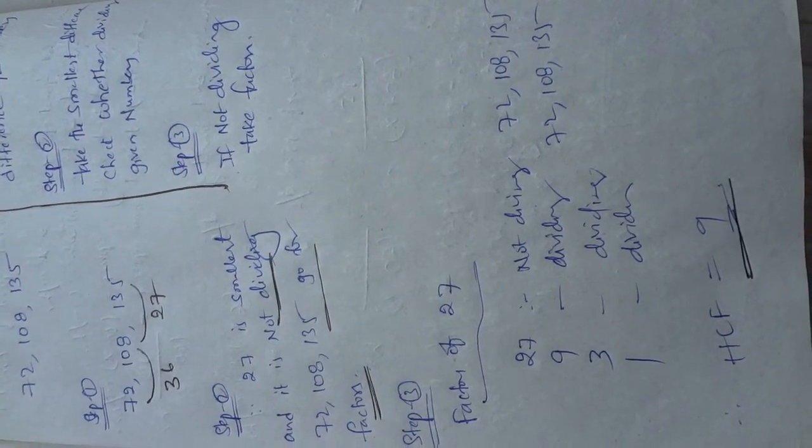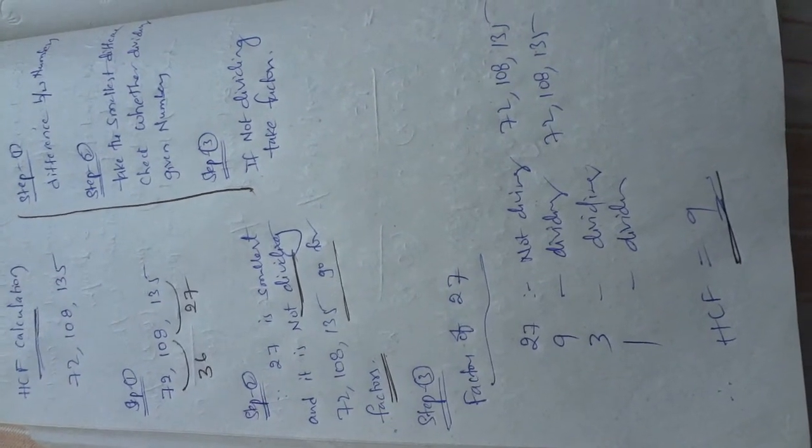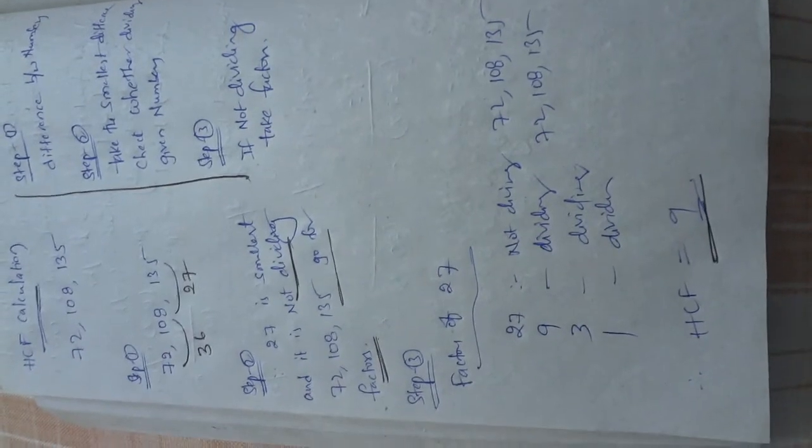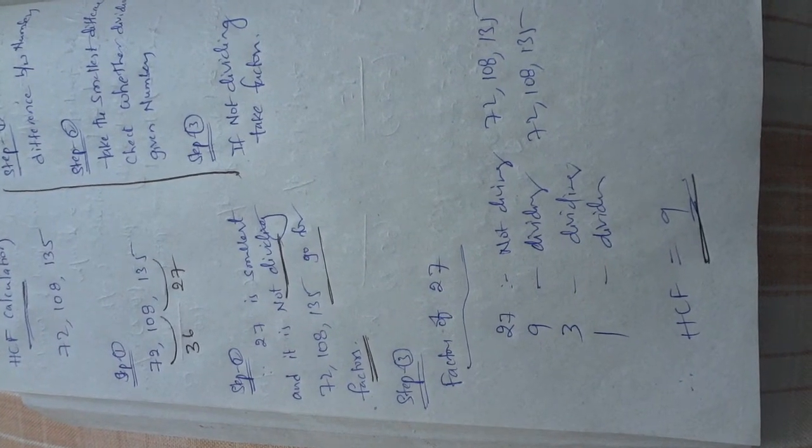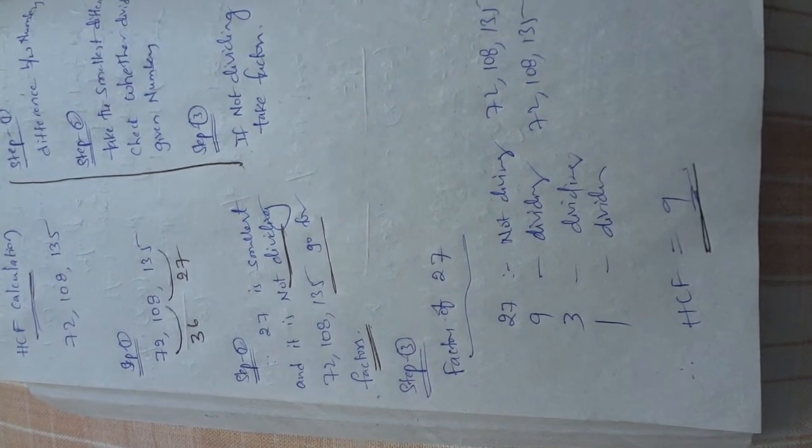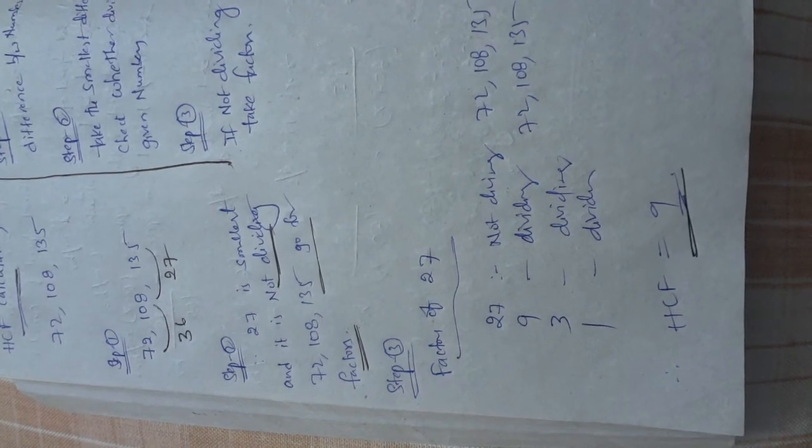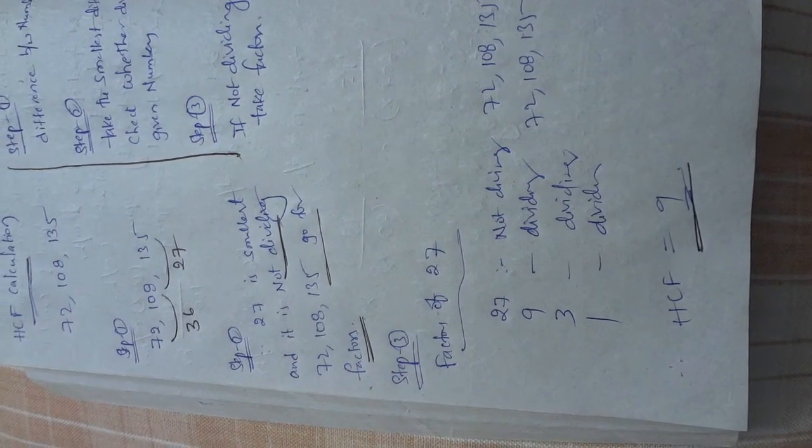This is an example showing the HCF calculation. If you want to do HCF calculation, we must follow three steps. Step 1 is take the difference between the given numbers: 72, 108, and 135. These are the three numbers given to us. Step 2 is take the smallest difference and check whether that number is dividing 72, 108, and 135.